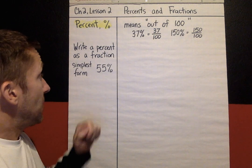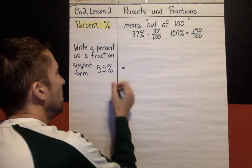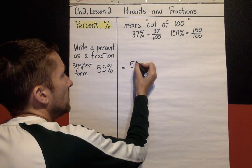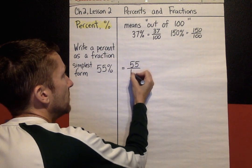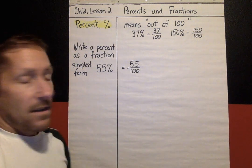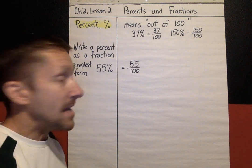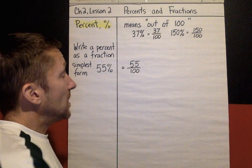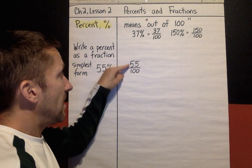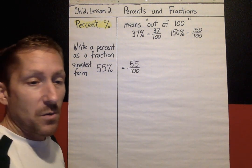So the first example we're going to look at is 55%. Well, percent means out of 100. So 55% means 55 out of 100. Percent, fraction. This fraction though is not in simplest form yet. So to get a fraction in simplest form, you have to do some thinking. What number goes into 55 and that same number goes into 100?